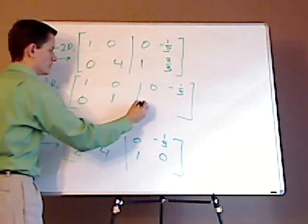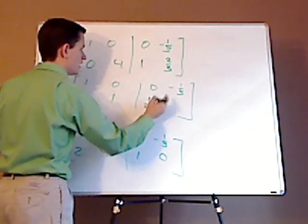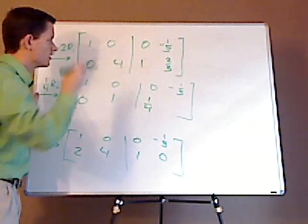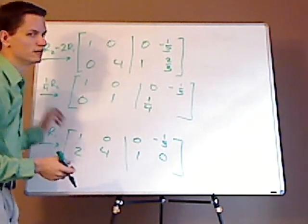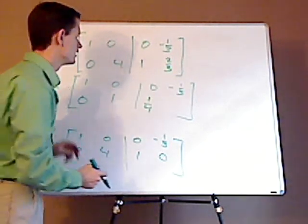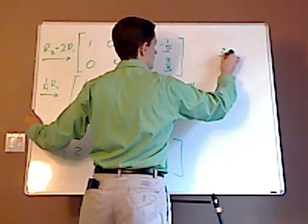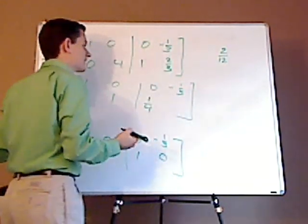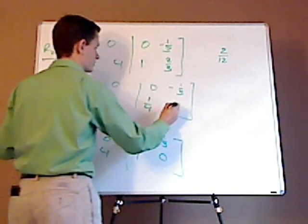One-fourth times one is one-fourth. And two-thirds times one-fourth is two over twelve. I'm going to write that there. Two over twelve, and that can be simplified to one over six.